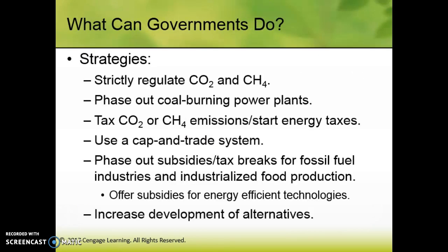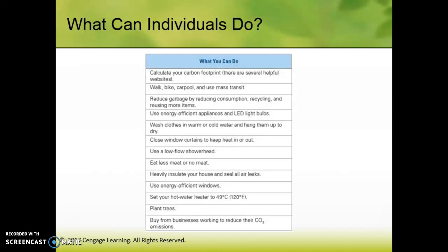What can governments do? We need to strictly regulate methane and CO2, phase out coal-burning power plants, tax carbon and methane emissions, and start energy taxes. Use a cap-and-trade system — make sure you understand that before test day. Phase out tax breaks and subsidies for fossil fuel industries. As I've said, we should incentivize the future, not subsidize the past. Make it cheap to be responsible for the planet, not cheap to pollute it. Increase development of alternative energy. This is pretty much what the Paris Agreement was trying to accomplish — most of the world's countries agreed to do these things to fight climate change.